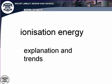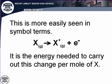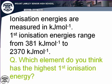We need to be pretty precise in our definition. The first ionization energy is defined as the energy required to remove the most loosely held electron from one mole of gaseous atoms. That will produce one mole of gaseous ions each with a charge of plus one. It's probably easier to see in symbolic terms: one mole of gaseous atoms goes to one mole of gaseous ions, and the ionization energy is the energy required for that change to occur.